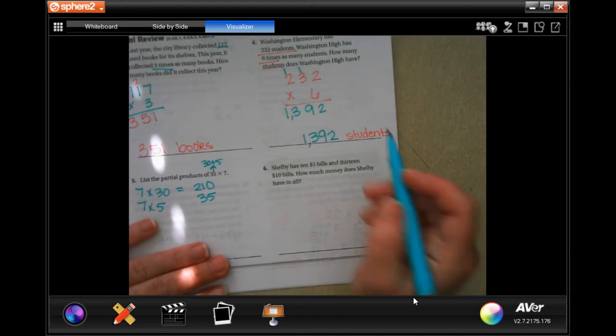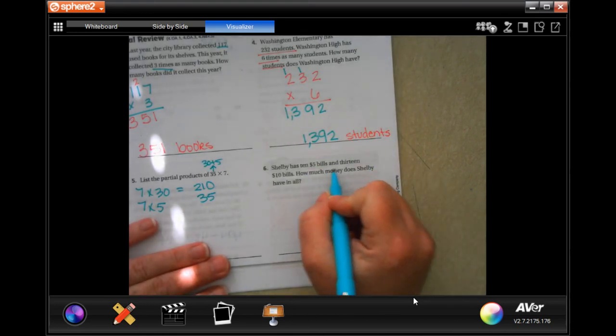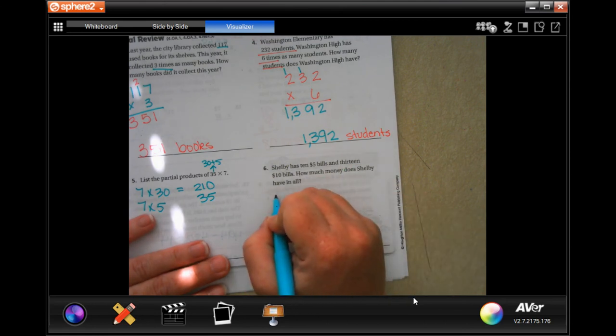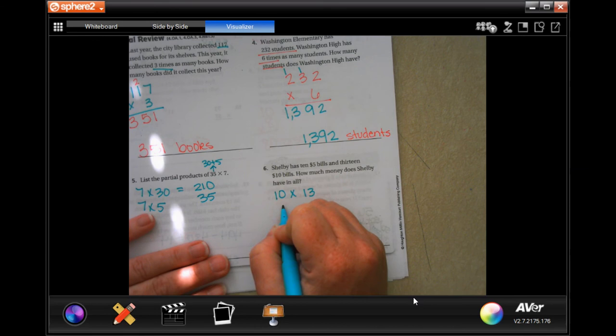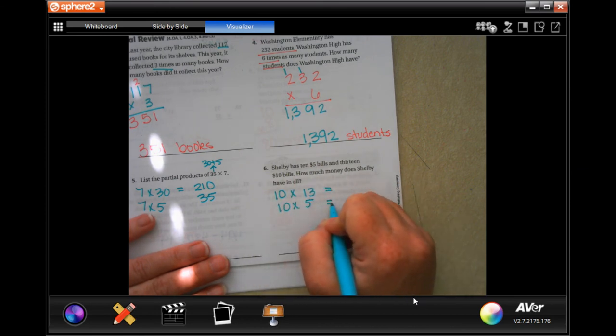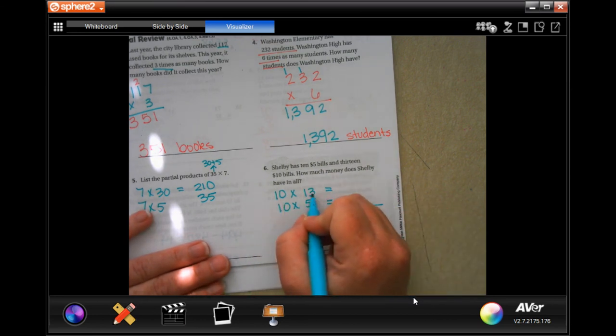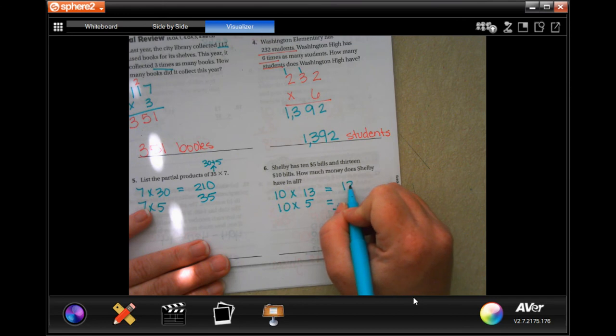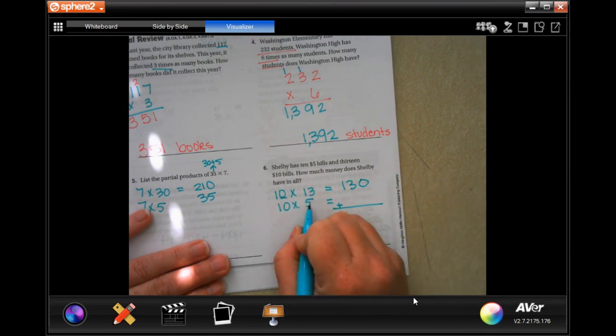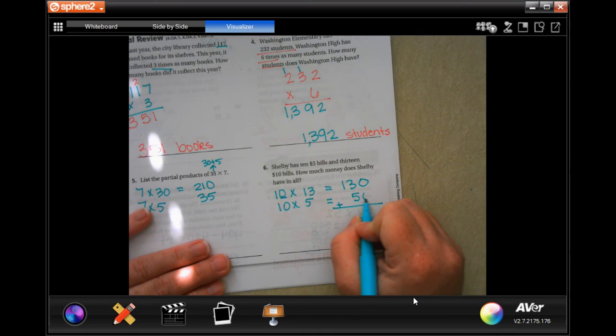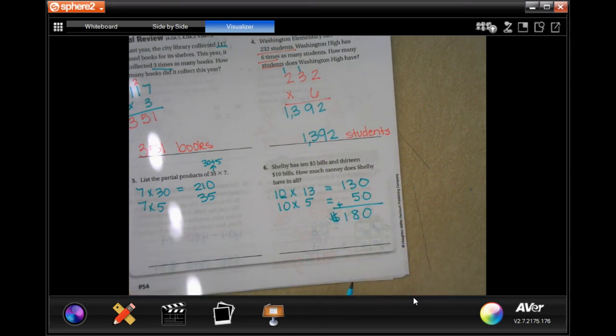Shelby has 10 $5 bills and 13 $10 bills. How much money does Shelby have in all? Well, 10 times 13 and 10 times 5 will tell us how much she has if we just add it up. 13 times 1 is 13. Then I need to add that 0 on. And 5 times 10 is 50. So she has $180.